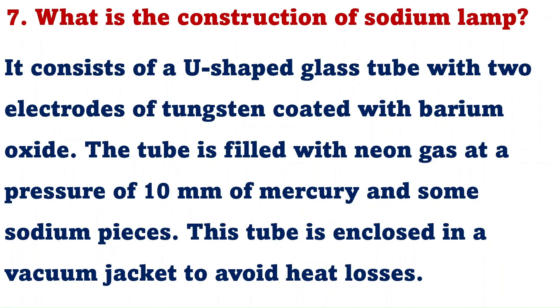What is the construction of sodium lamp? It consists of a U-shaped glass tube with two electrodes of tungsten coated with barium oxide. The tube is filled with neon gas at a pressure of 10 mm of mercury and some sodium pieces. This tube is enclosed in a vacuum jacket to avoid heat losses.